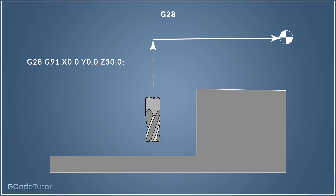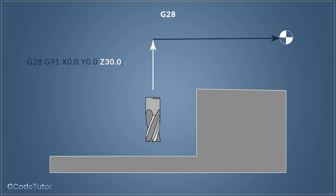Let me explain with an example. We have G28, G91 for incremental mode, X0, Y0, but Z30. When it executes this move, it would go to Z30 before it goes to the machine zero position. We can do this in any axis, not just Z. So G28 is a reference return via the points that we give it using X, Y, and Z coordinates — it goes to those positions before returning to machine zero.